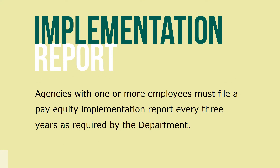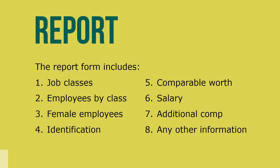Local government agencies with one or more employees must file a Pay Equity Implementation Report every three years as required by the department. The implementation report form requires that the following information be submitted: a list of all job classes in the political subdivision; the number of employees in each class; the number of female employees in each class; an identification of each class as male-dominated, female-dominated, or balanced; the comparable value of each class as determined by the job evaluation system; the minimum and maximum salary for each class and the amount of time in employment required to qualify for the maximum; any additional cash compensation; and any other information requested by the commissioner.